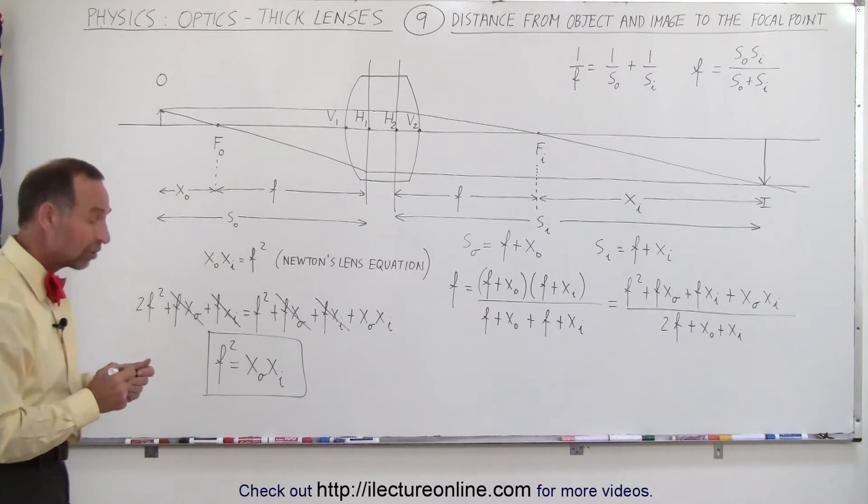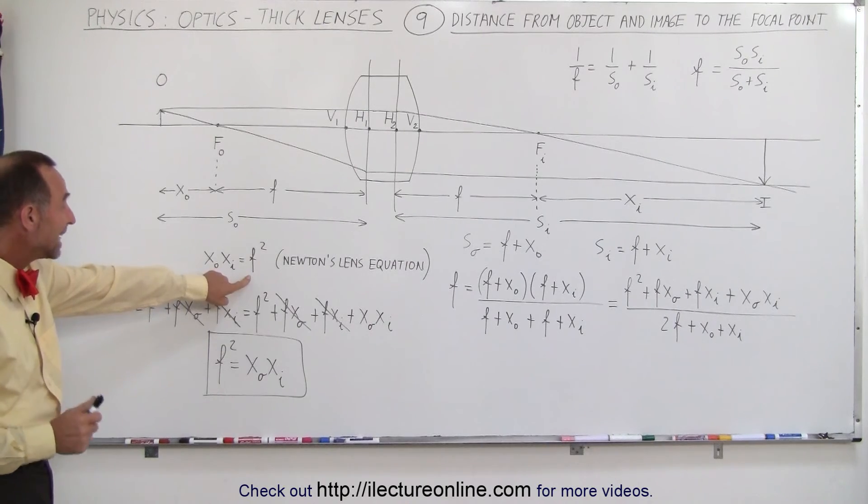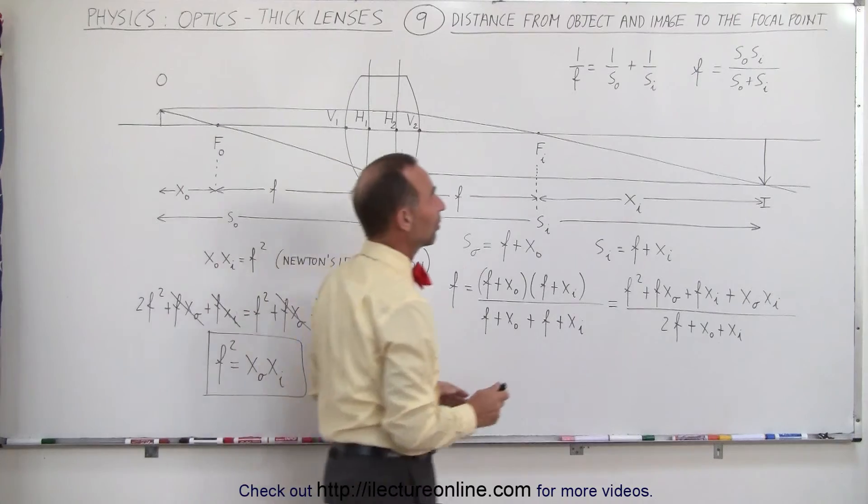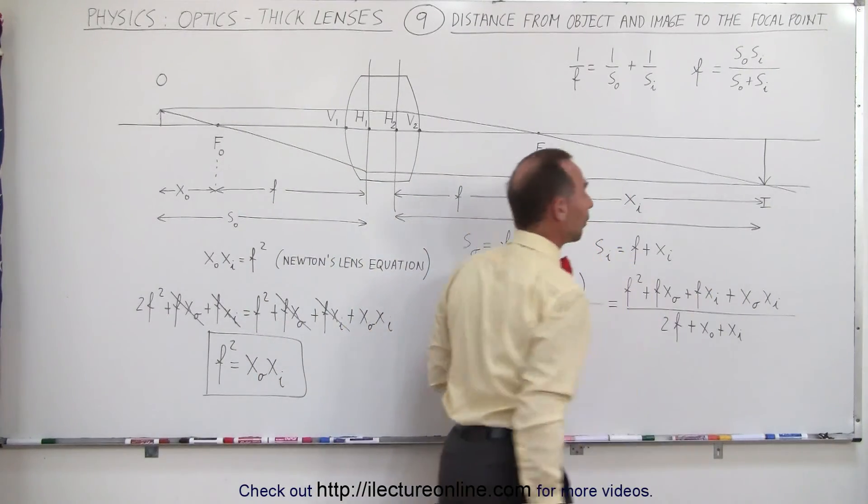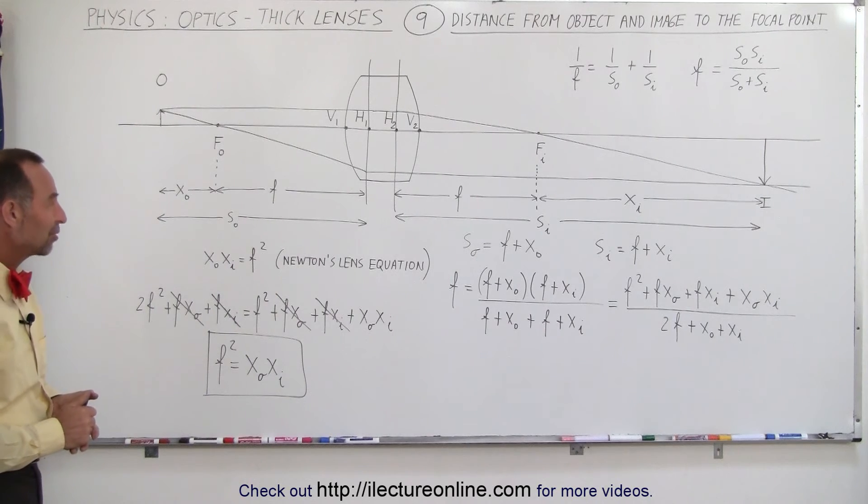So you can see indeed using that lens equation there we can find that the focal length squared equals the distance from the object to the focal point times the distance from the image to the focal point, and that's known as Newton's lens equation.